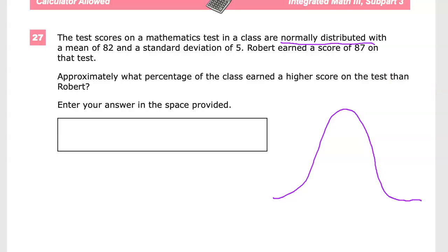With a mean of 82, so that value here right in the middle, and you're going to lie to yourself and pretend that's a straight line, is going to be 82, with a standard deviation of 5. Now, the thing about normal distribution is we can calculate percentages outside of certain standard deviations.